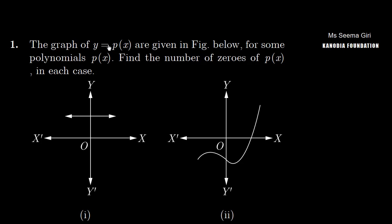Question number 1. The graph of y equals p(x) is given in the figure below, for some polynomial p(x). Find the number of zeros of p(x) in each case.